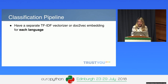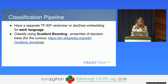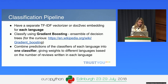To give you an idea of how our classification pipeline works: the first thing is to transform reviews into vectors using either TF-IDF or doc2vec embeddings. Since we have reviews in many different languages, we do this separately for each language. Then, again separately for each language, we use a classifier called gradient boosting — I won't go into detail now, but it's basically an ensemble of decision trees. In the end, we combine the predictions of the classifiers for each language into one final classifier, giving weights based on the number of reviews in each language. So if a hotel has 90% of reviews in German and only a few in Italian, we give a higher weight to the German classifier.